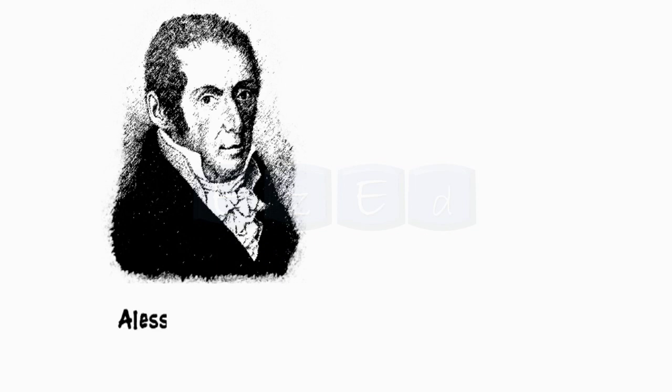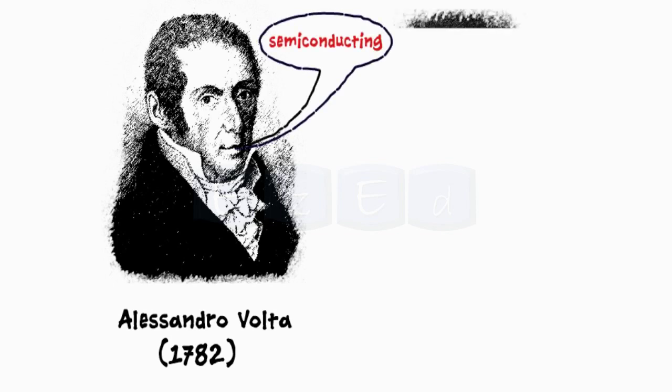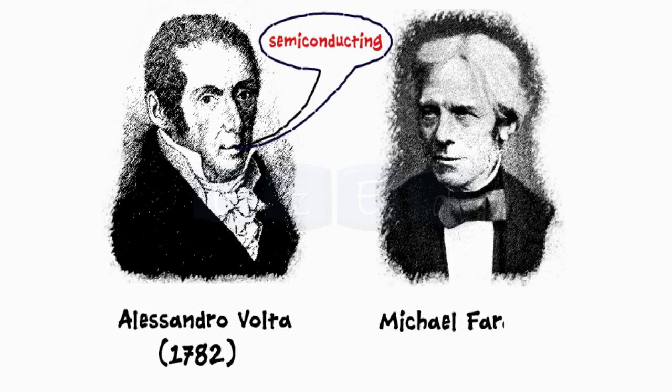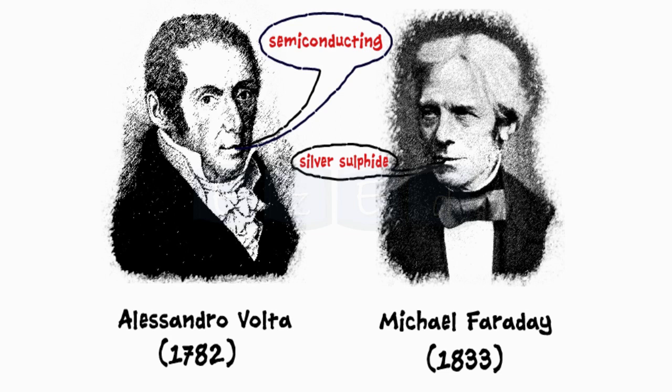The term semi-conducting was used for the first time by Alessandro Walter in 1782. However, the first documented observation of a semiconductor effect is that of Michael Faraday in 1833, who noticed that the resistance of silver sulphide decreased with temperature, which was different from the temperature dependence observed in metals.